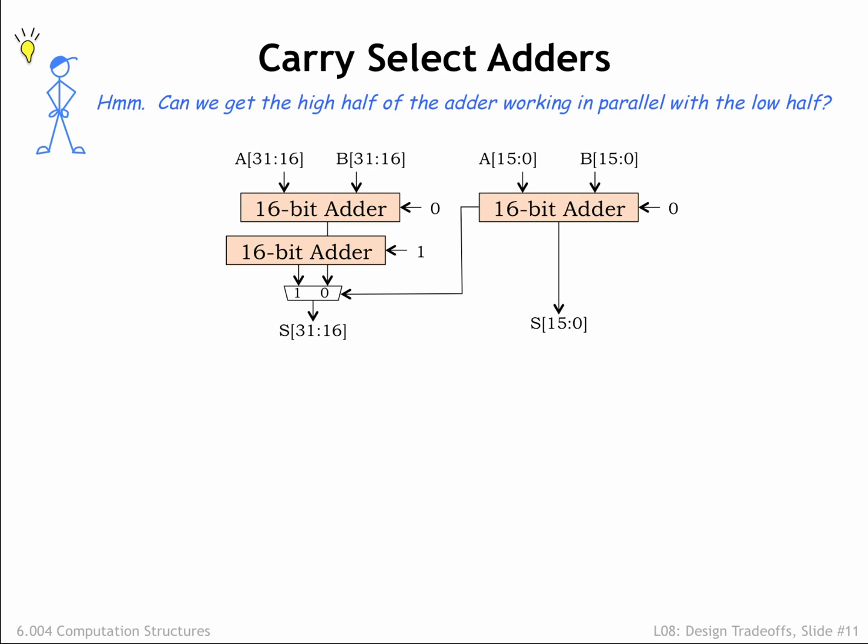Suppose we wanted to build a 32-bit adder. Let's make two copies of the high 16-bits of the adder, one assuming the carry-in from the low bits is 0, and the other assuming the carry-in is 1. So now we have three 16-bit adders, all of which can operate in parallel on newly arriving A and B inputs.